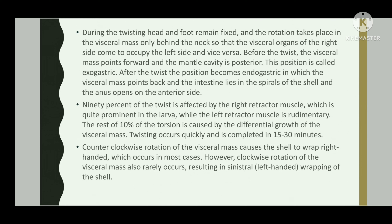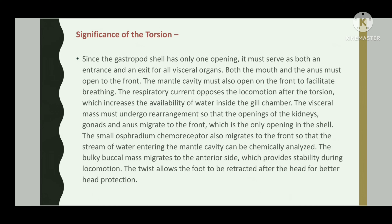Twisting occurs quickly and is completed in 15 to 30 minutes. Counterclockwise rotation of the visceral mass causes the shell to wrap right-handed, which occurs in most cases. However, clockwise rotation of the visceral mass also rarely occurs, resulting in sinister left-handed wrapping of the shell.